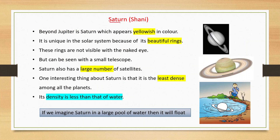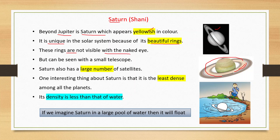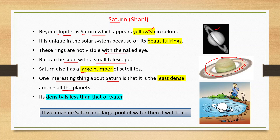Beyond Jupiter is Saturn, also known as Shani, which appears yellowish in color. It is unique in the solar system because of its beautiful rings, which are not visible with the naked eye but can be seen with a small telescope. Saturn also has a large number of satellites. One interesting fact about Saturn is that it is the least dense among all the planets — its density is less than that of water, meaning if you imagine Saturn in a large pool of water, it would float.